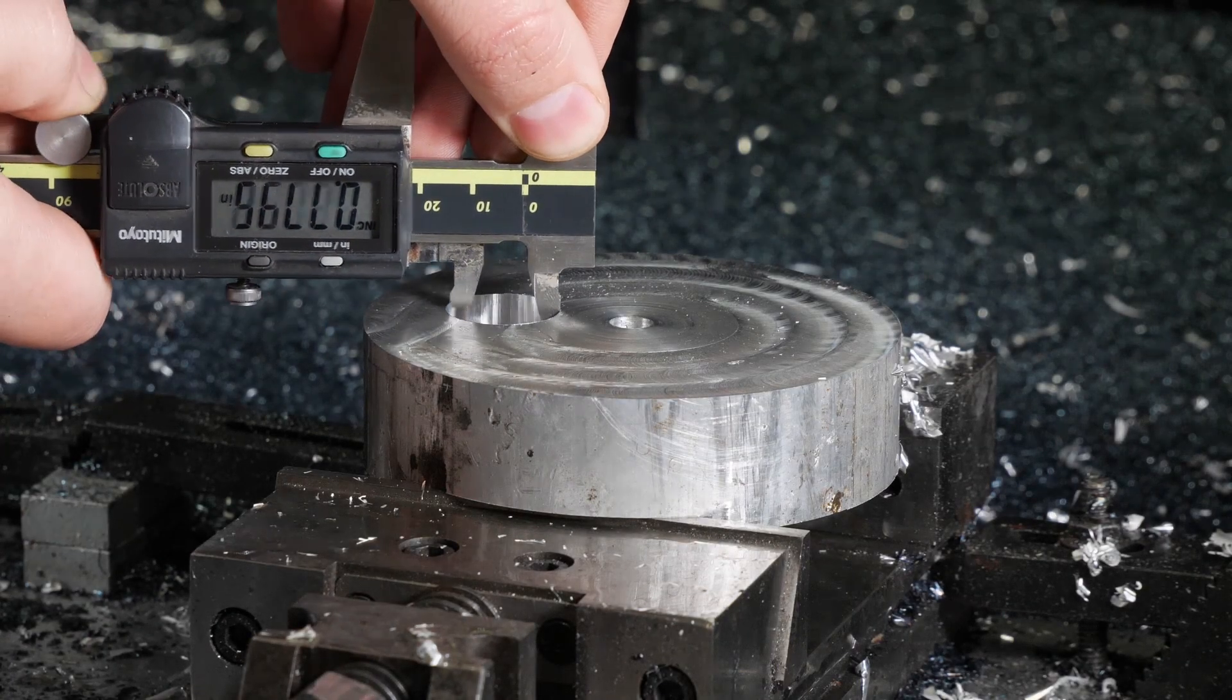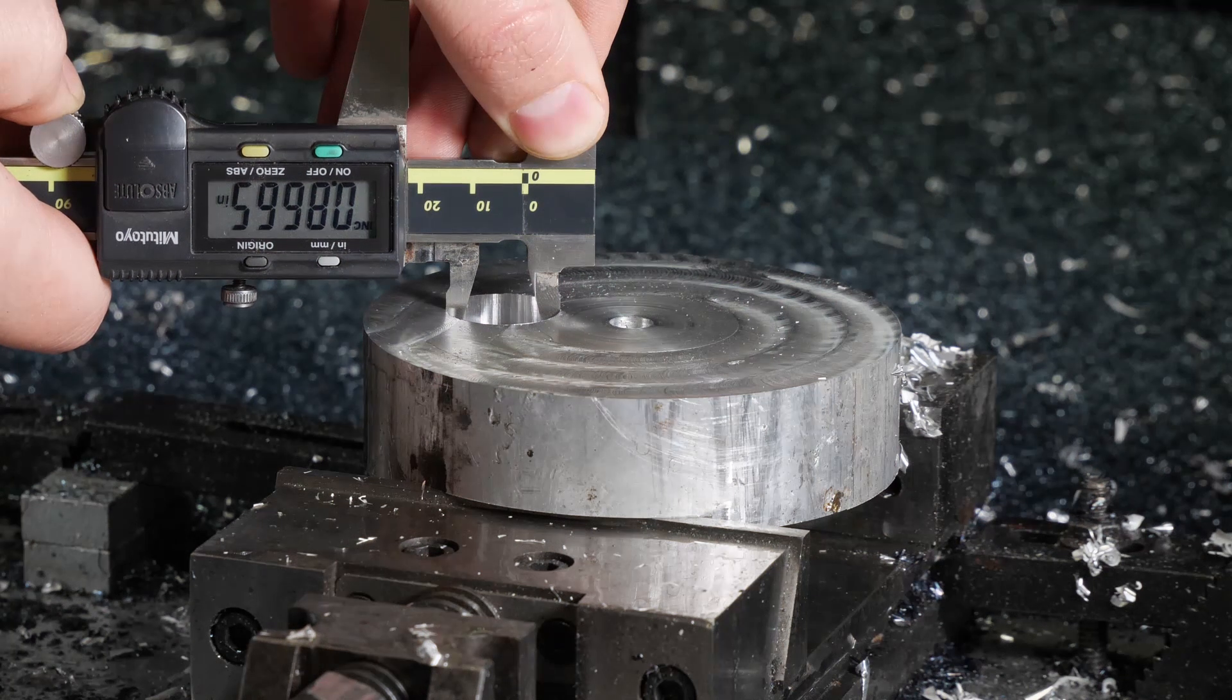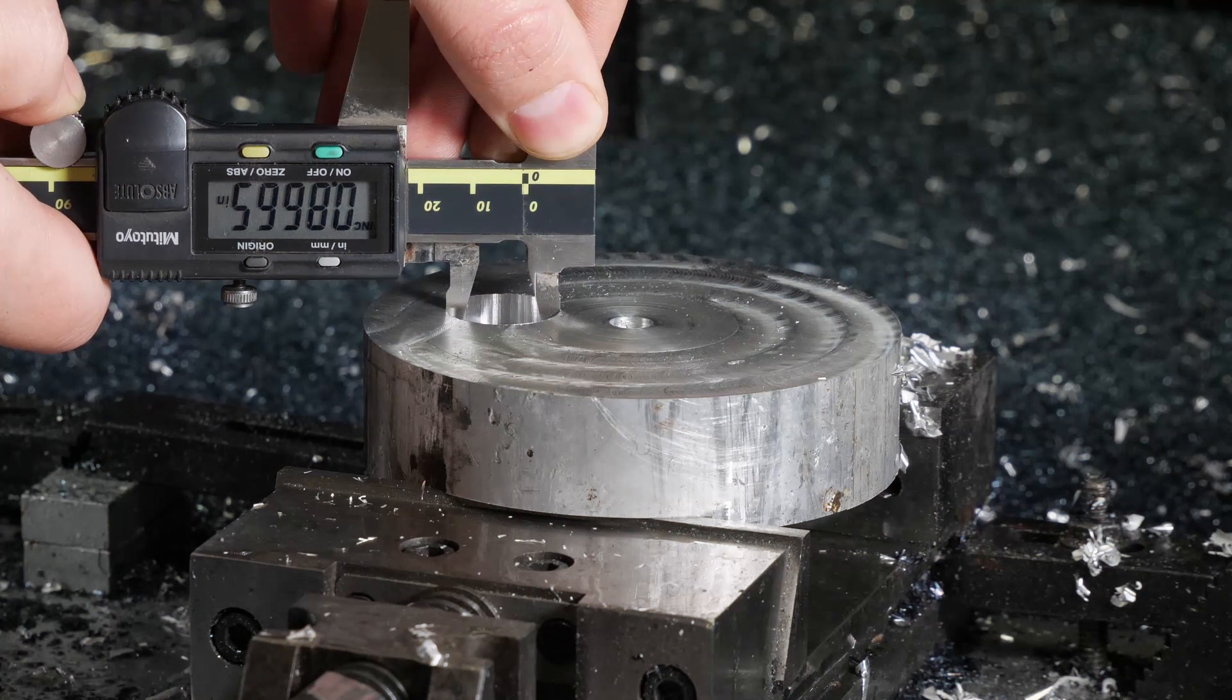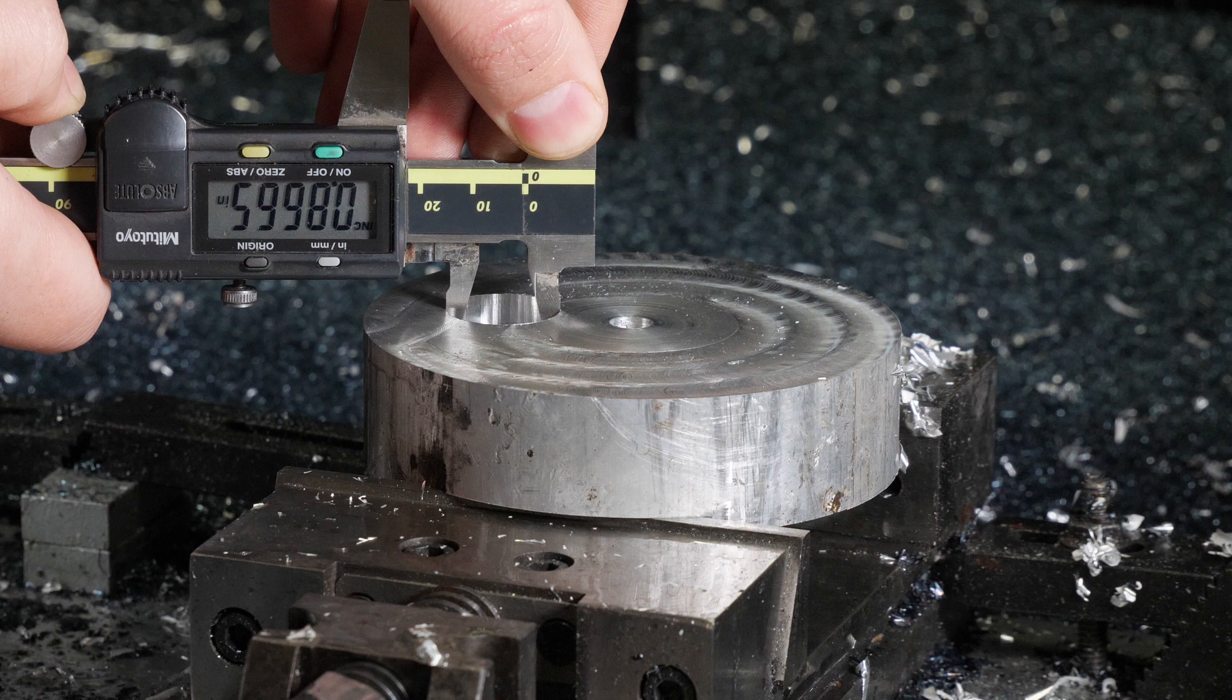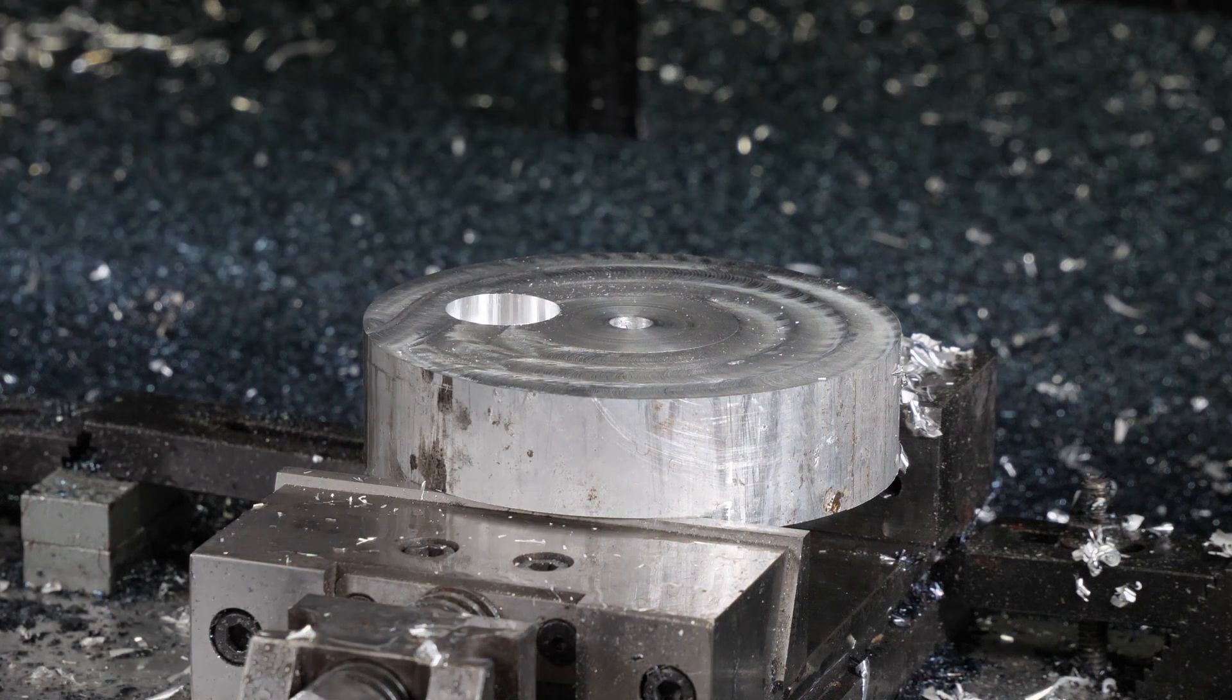Now that our boring finish pass is complete we can take a quick measurement and see how we did. We were shooting for 0.867 and looking at this measurement it looks like we're exactly right where we want to be. So now we can grab the bearing and see how it fits.